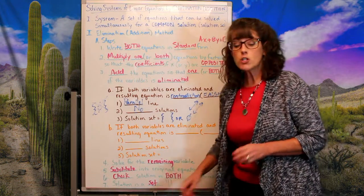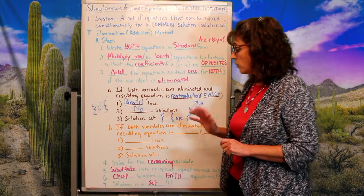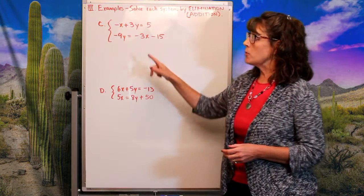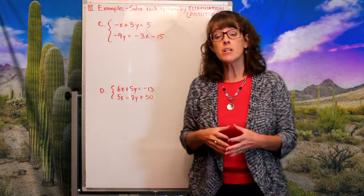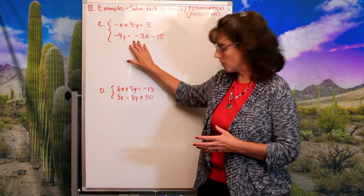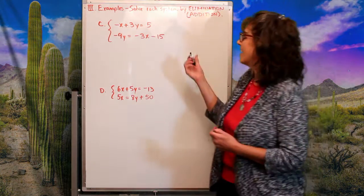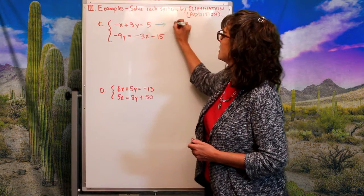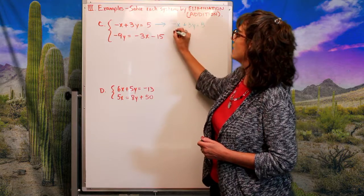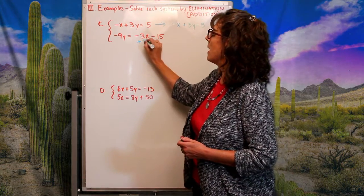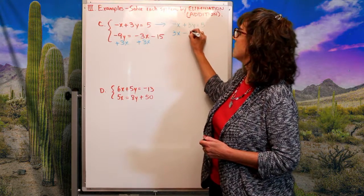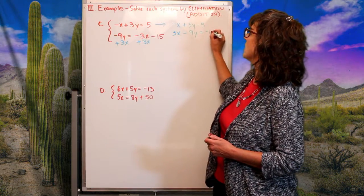Now let's work through the next example. The top equation is already in standard form, but the bottom one is not, so I'll rearrange the bottom equation into standard form by moving the 3x over, giving me 3x − 9y = −15.